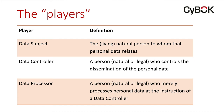Data subject, data controller, data processor. The data subject is the natural person to whom personal data relates. The data controller is the person who controls the dissemination or other processing of personal data. The data processor, on the other hand, is a person who's merely processing personal data under the instruction of a data controller. When data protection law first started many decades ago, lawmakers thought that they were regulating people who ran computer systems, so a lot of regulatory focus was on what we now call the data processor.